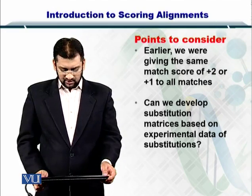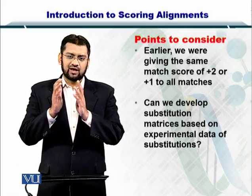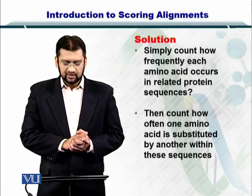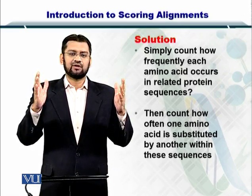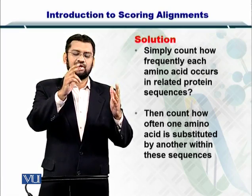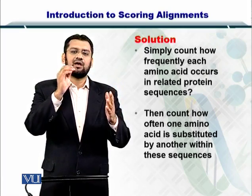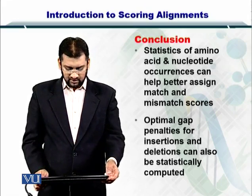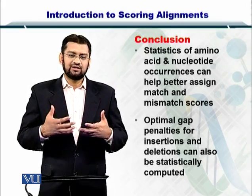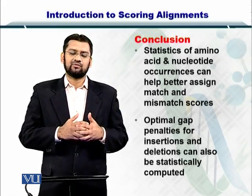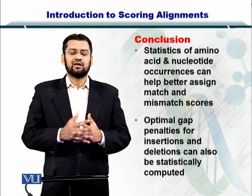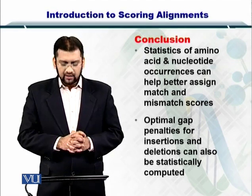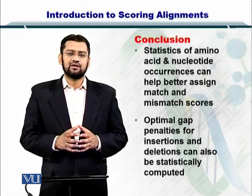Can we develop a substitution matrix where one amino acid or nucleotide is replaced by another, and have a scoring scheme for that? The answer is yes. We have lots of protein sequences and we can see which amino acid occurs how many times, and for DNA sequences which nucleotide occurs how many times and in how many sequences they are conserved. Such statistics of how many times a nucleotide has occurred and how many times it has been replaced within similar sequences can lead us to construct better scoring schemes for local and global alignments, and optimal gap penalties can also be constructed from these statistics.